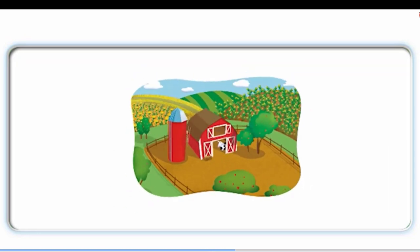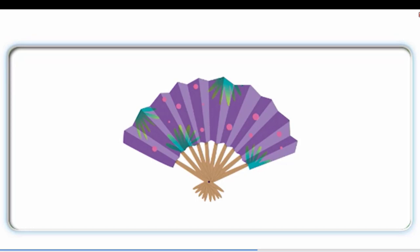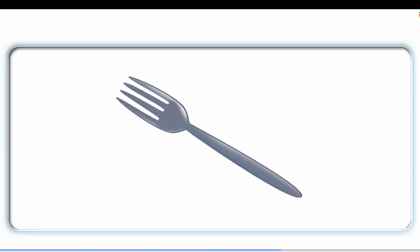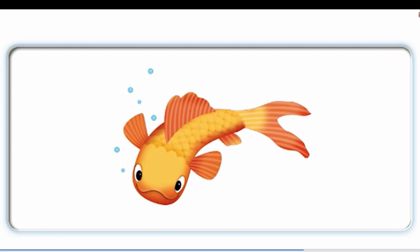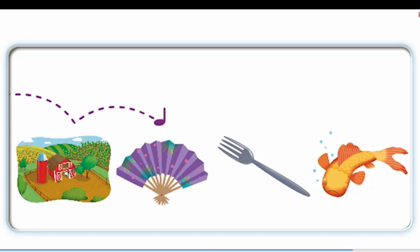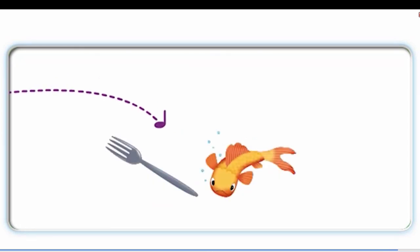Farm, farm. Fan, fan. Fork, fork. Fish. Farm, fan, fork, fish. Fan, fork, fish. It is a farm. It is a fan. It is a fork. It is a fish.